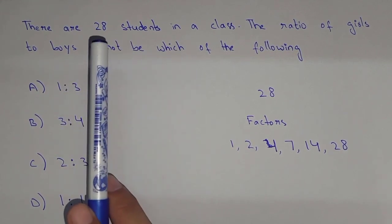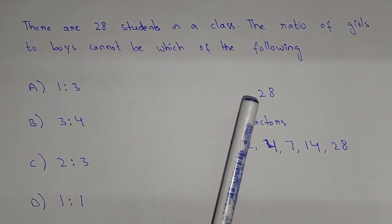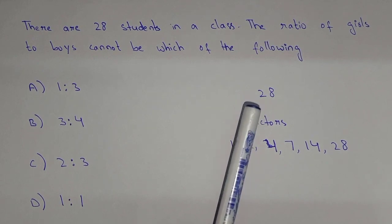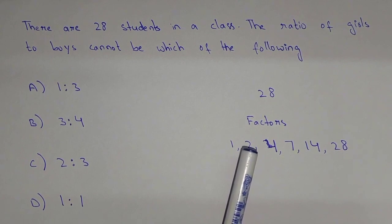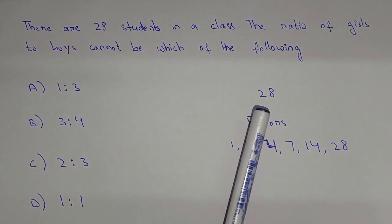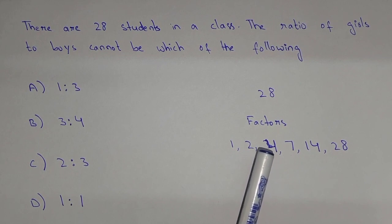So here we have 28. First of all, we have to find out the factors of 28. So 1 can be multiplied by 28. 2 multiply by 14, that is also 28. And 4 multiply by 7, that is 28.